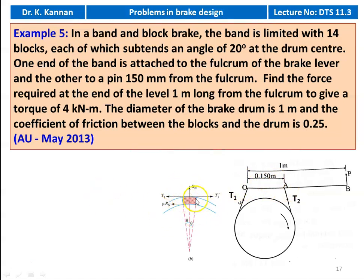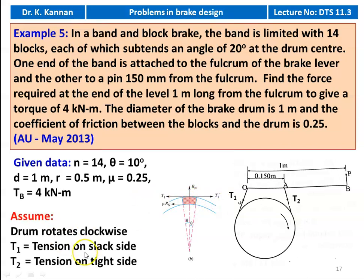From the diagram, O is the fulcrum and A is the other end of the band. Total lever length is 1 meter; the other end of the band is 0.15 meter from the fulcrum. Each block subtends 2θ = 20 degrees, so θ = 10 degrees. The given data: N = 14 blocks, R = 0.5 meter, μ = 0.25, braking torque Tb = 4 kilonewton meter. Assuming the drum rotates clockwise, T2 is the tight side and T1 is the slack side.